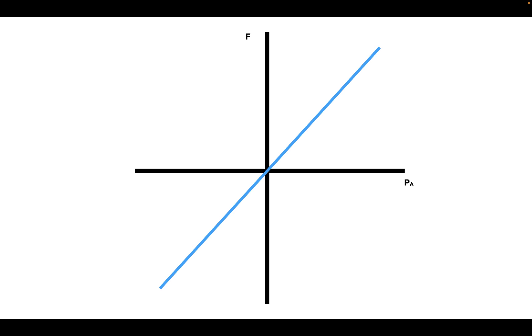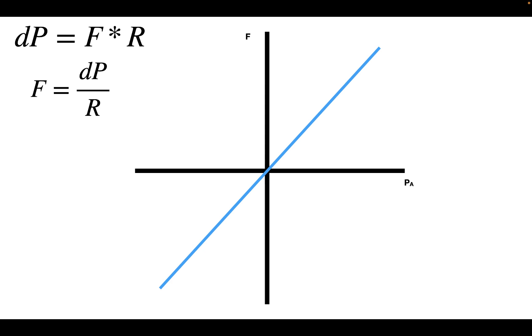Let's start off with the dynamic component, the alveolar pressure. We're going to graph the relationship between the flow of air and the alveolar pressure, assuming that the barometric pressure is zero. The equation that describes this curve comes from Ohm's Law of Hemodynamics, which states that the difference of pressure is equal to the flow times the resistance. When you solve for flow, the slope of this line is going to be 1 over the resistance.